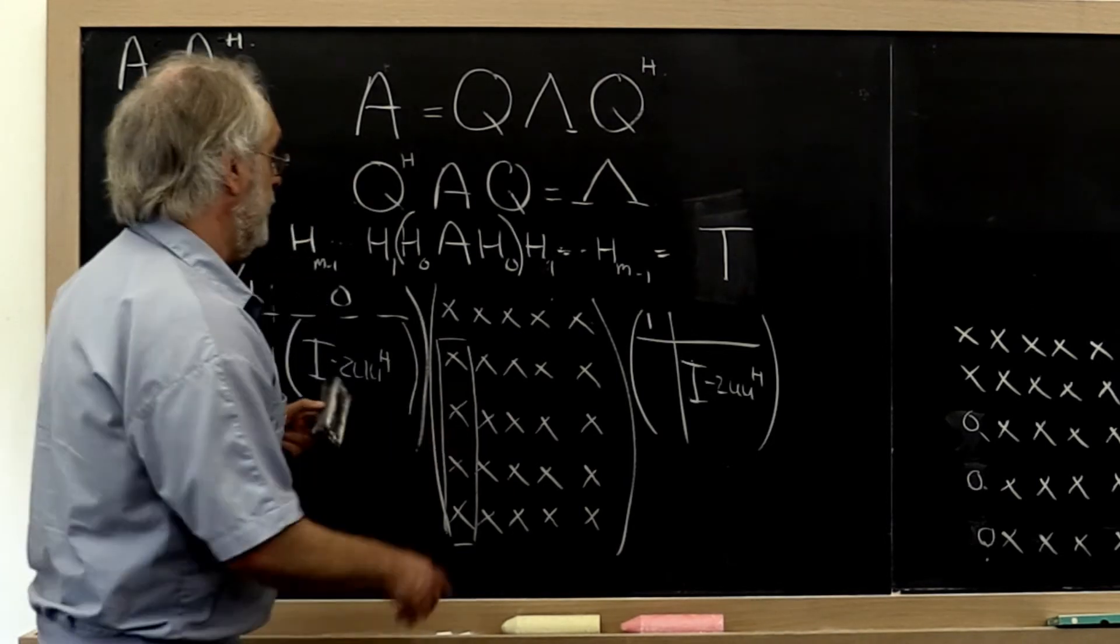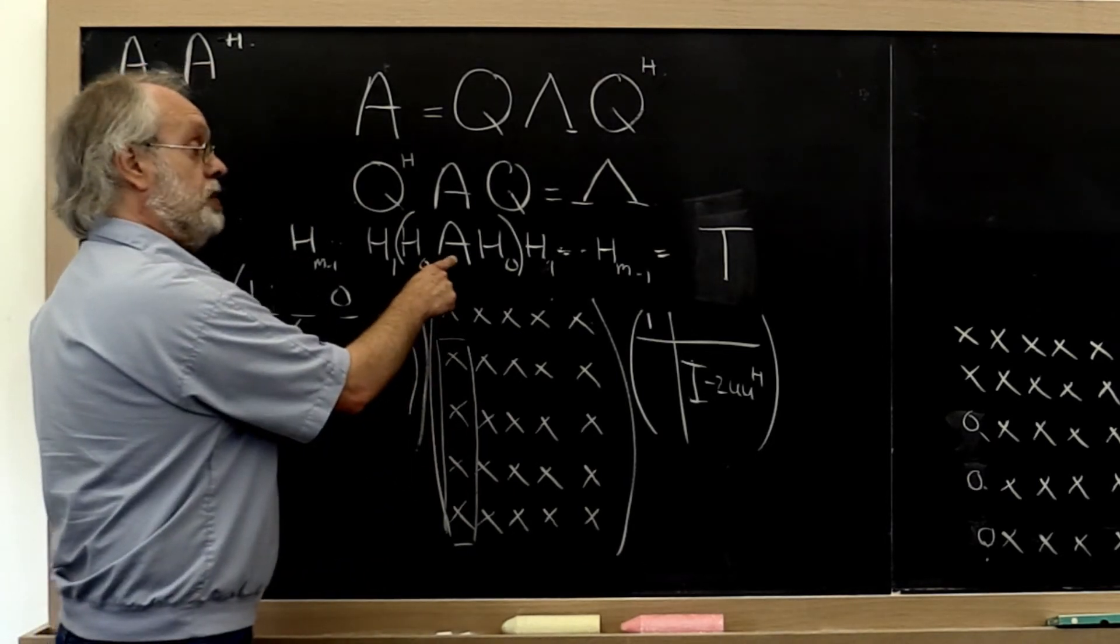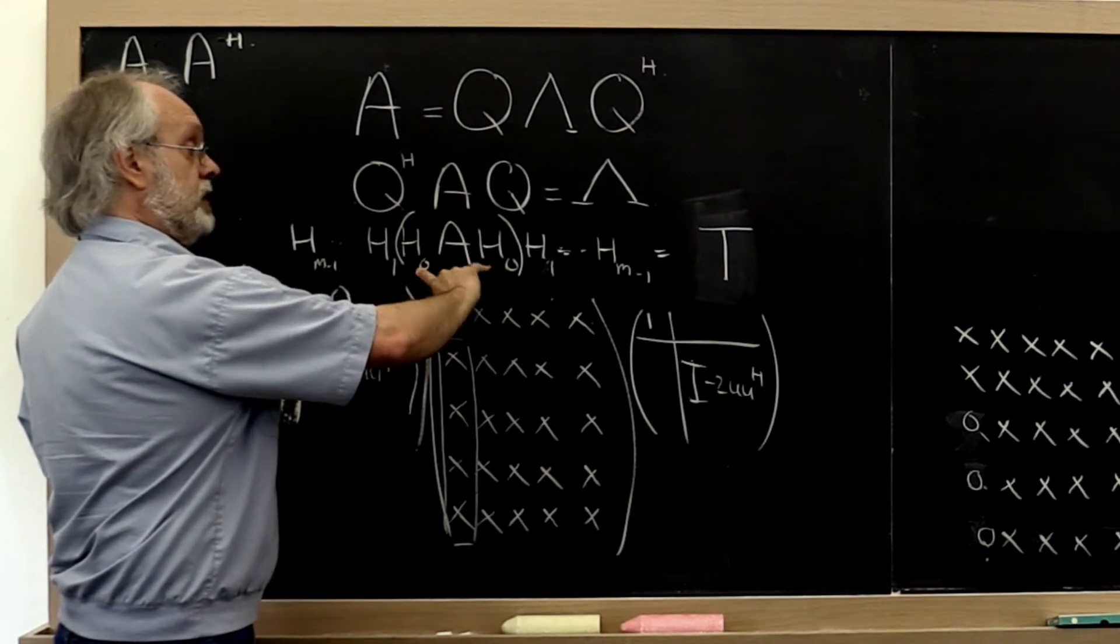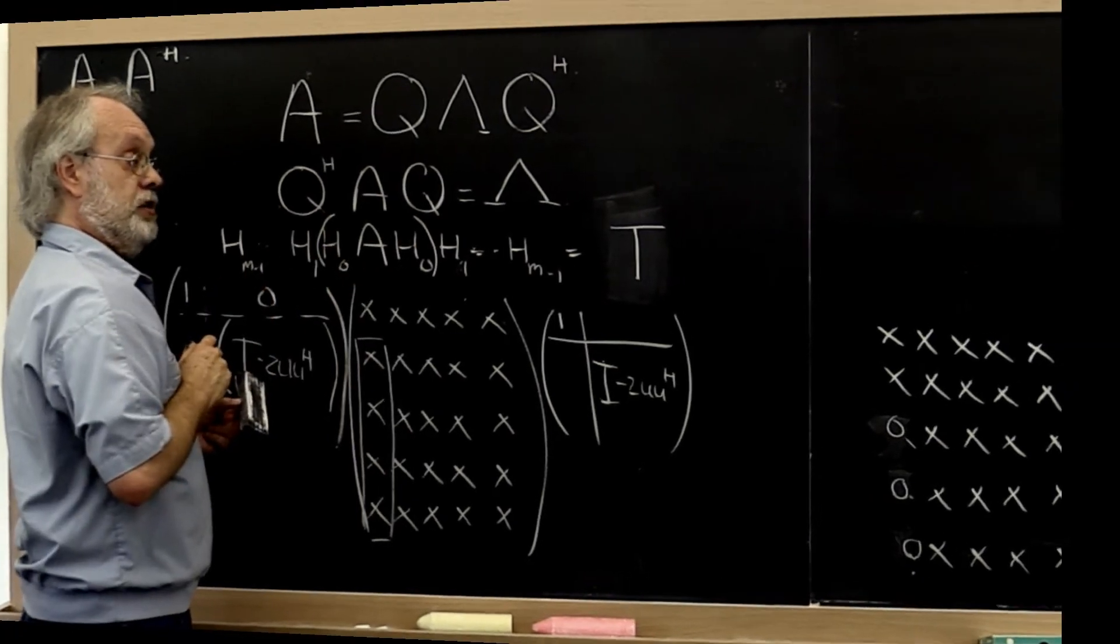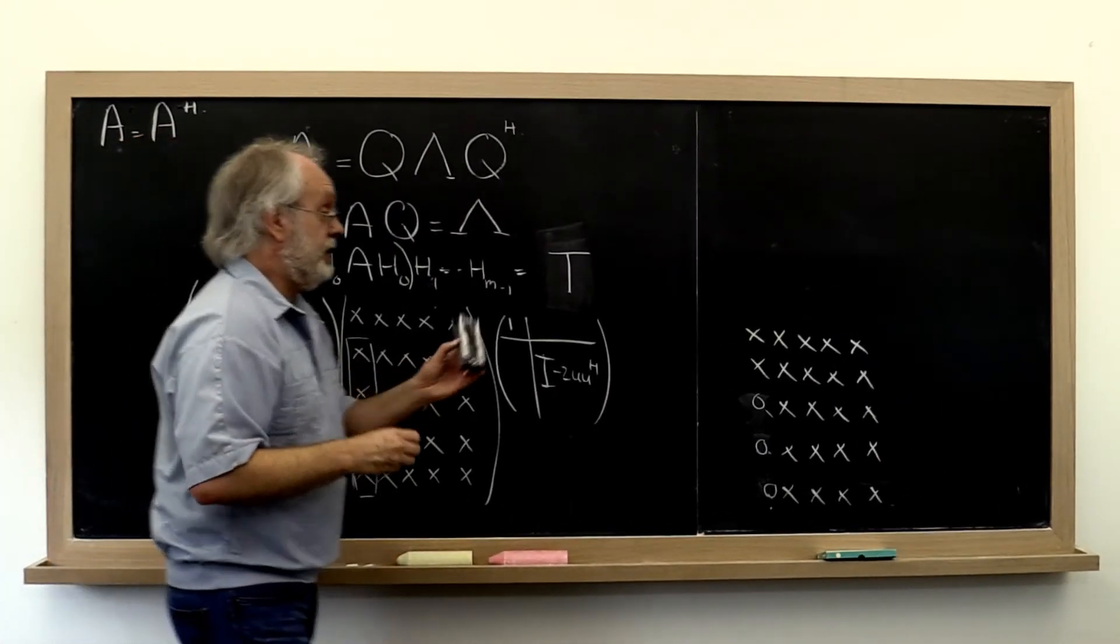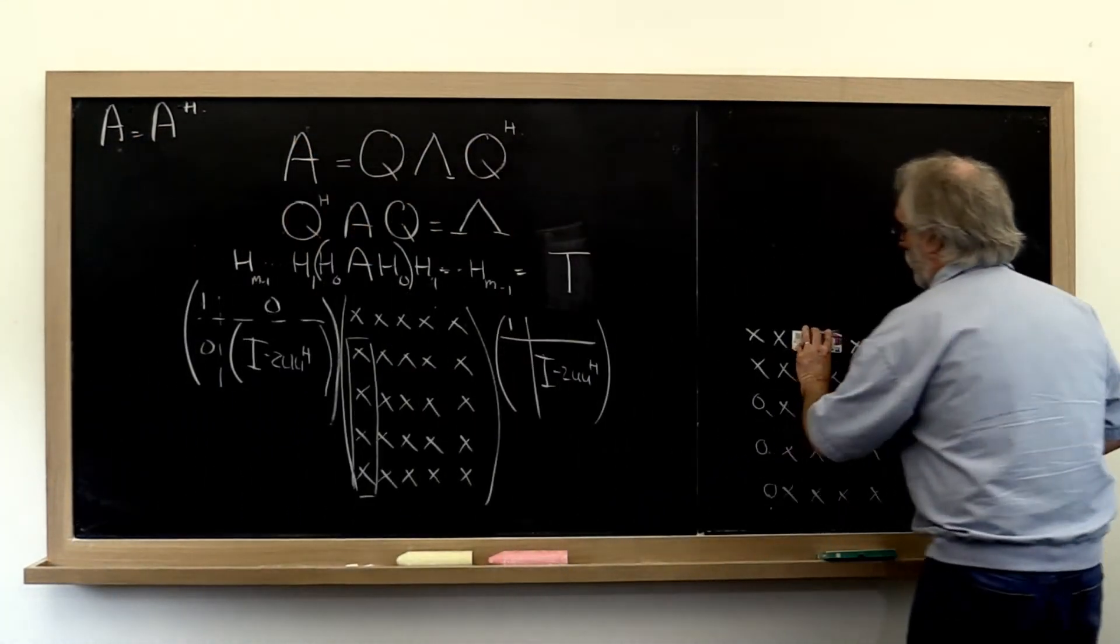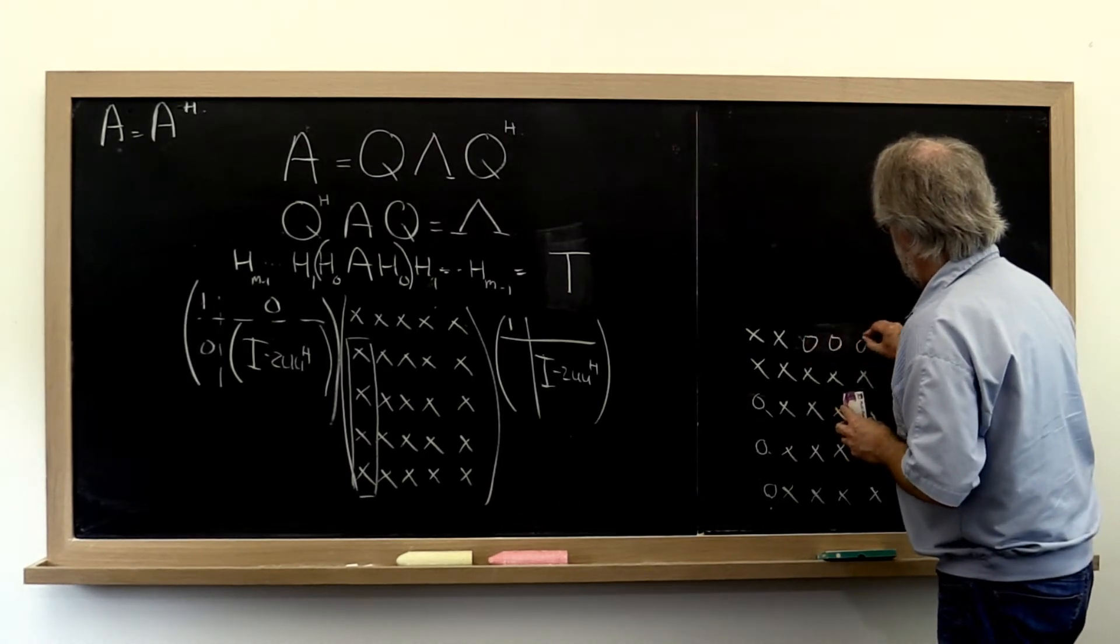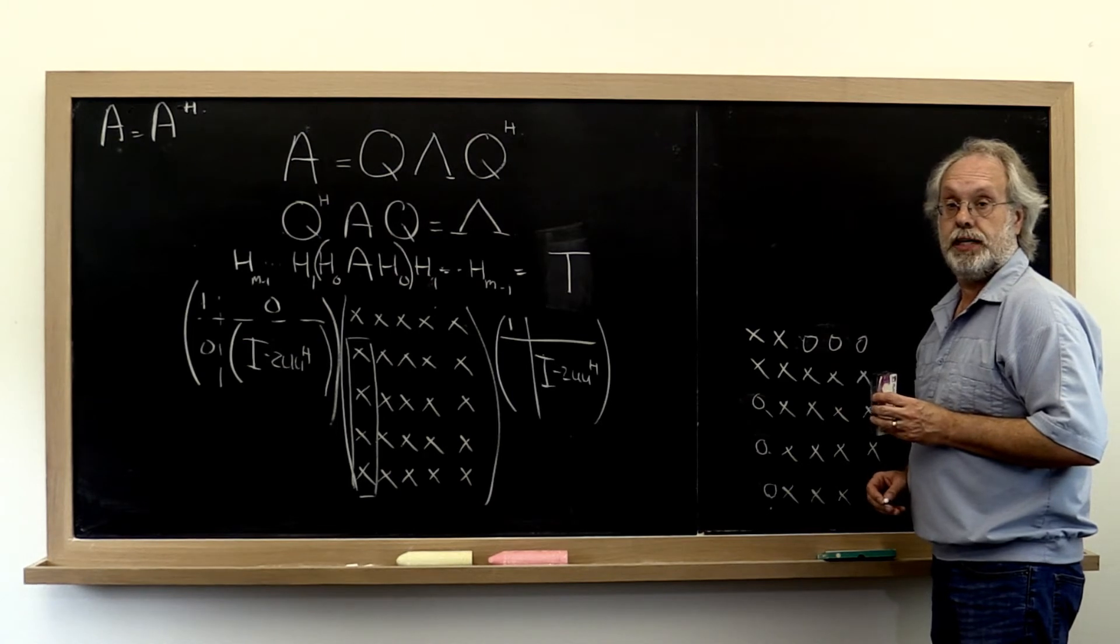The second observation is that if A is a Hermitian matrix then this right here is also a Hermitian matrix if these are Householder transformations. And what does that mean? That means actually that happily we also introduce zeros right here.